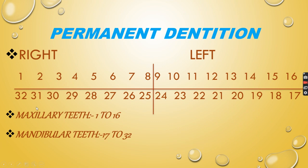For permanent dentition: 1 to 8 is the right maxillary quadrant, 9 to 16 is the left maxillary quadrant. Always starting with 17 — not 24 — for the left mandibular quadrant, which runs 17 to 24. And 25 to 32 is the right mandibular quadrant. So maxillary teeth are numbered 1 to 16 in permanent dentition.